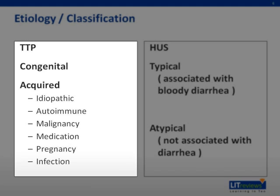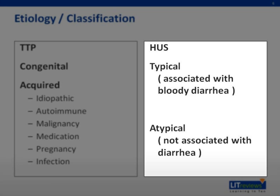The etiology of TTP can be divided into congenital or acquired. There are many etiologies for acquired TTP, and these have to be considered when a patient is diagnosed with TTP. The main reason to ascertain the etiology is because response to treatment is different. HUS is classically divided into typical, associated with diarrhea, or atypical, not associated with diarrhea. Classical HUS has excellent prognosis with supportive treatment and is self-resolving, while atypical HUS needs plasma exchange with poorer prognosis.